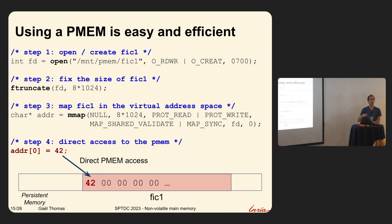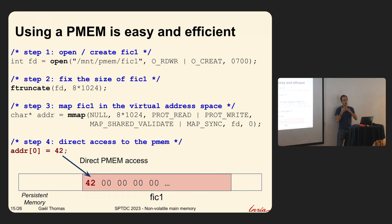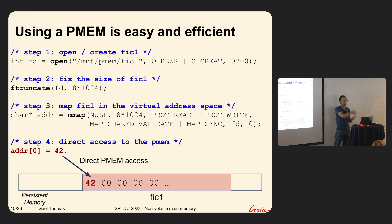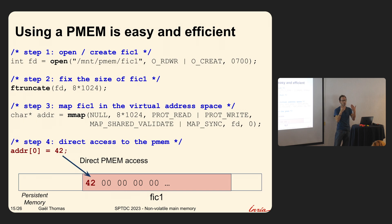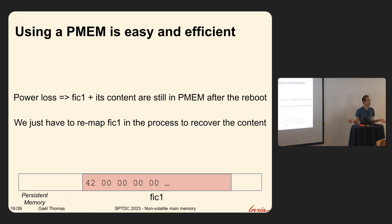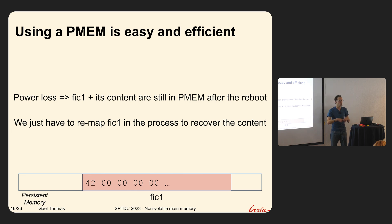In four or five lines of code, you can use persistent memory. What's interesting is the clean separation: we reuse the file system abstraction for naming, and then we have direct memory access. A file system and memory are not so far from each other. When you shut down your computer, persistent memory is still there — nothing to do. When you reboot, just reopen your file and find your content exactly as it was.